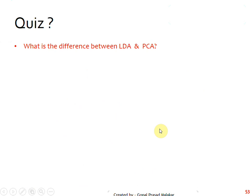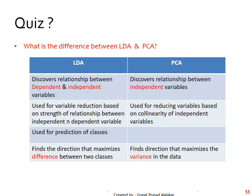To put these in words, LDA discovers the relationship between dependent and independent variables. Whereas PCA is all about the relationship between independent variables.